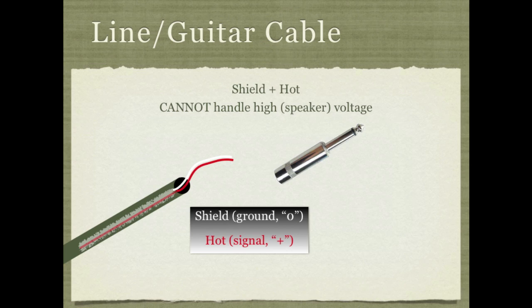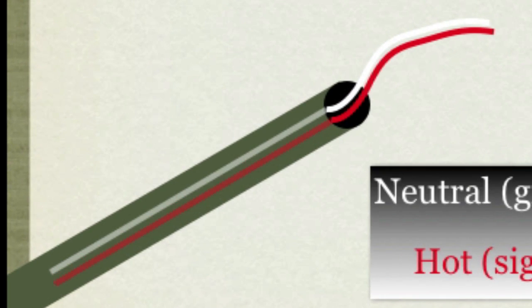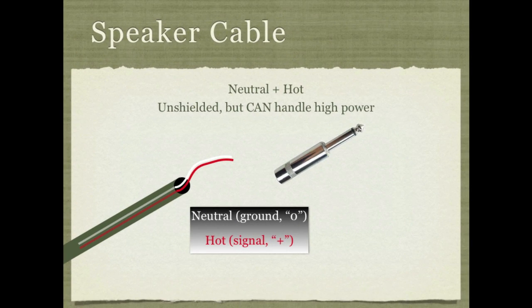Low voltage cables are constructed with a shield that wraps around the signal. The shield is electrically conductive and serves as the ground or zero point. Keep in mind that these cables cannot handle speaker level signals — if you try to run a speaker level signal through them you might get away with it briefly, but the cable will start to heat up, your amplifier won't perform properly, and there's even a fire hazard.